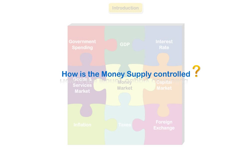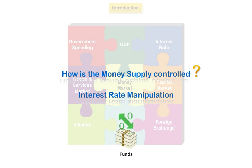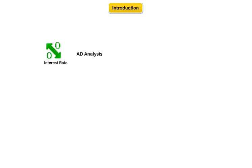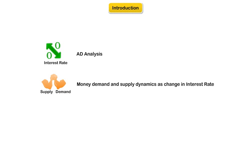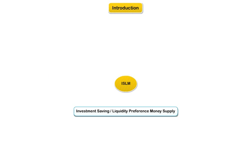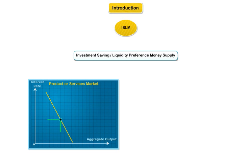How is money supply controlled? Through interest rate manipulations. We would cover here the interest rate effects on money supply. We introduce here a new concept called ISLM, which stands for Investment Saving or Liquidity Preference Money Supply Model. We would use this model to explain the equilibrium dynamics of both product and services markets and the money markets.